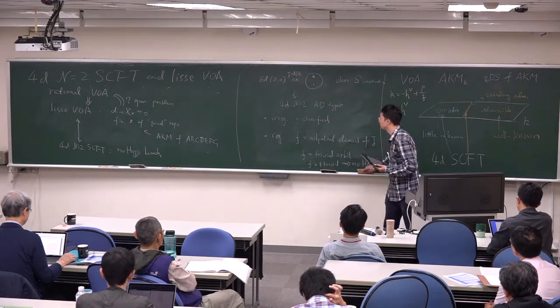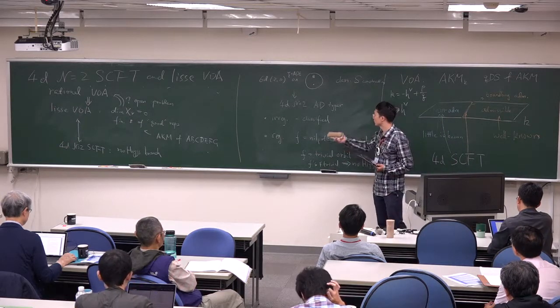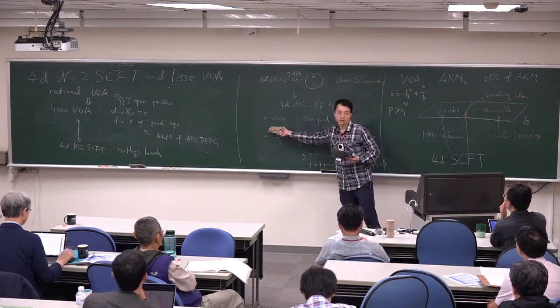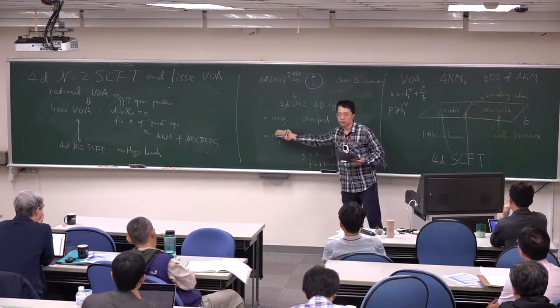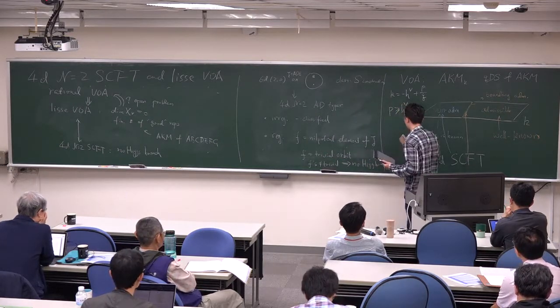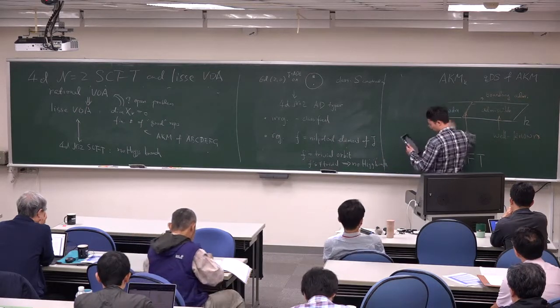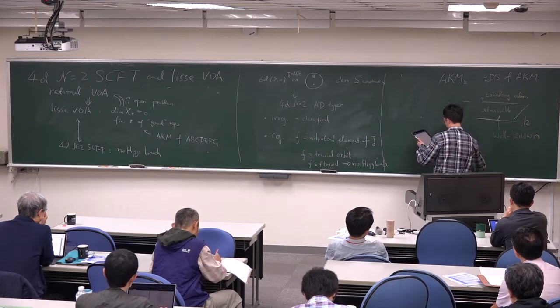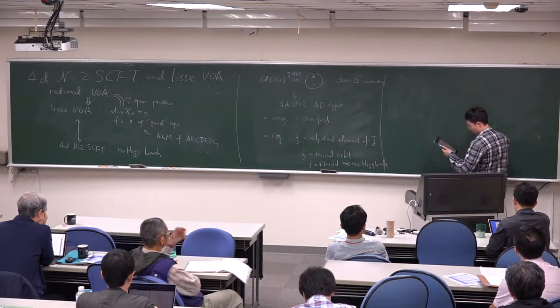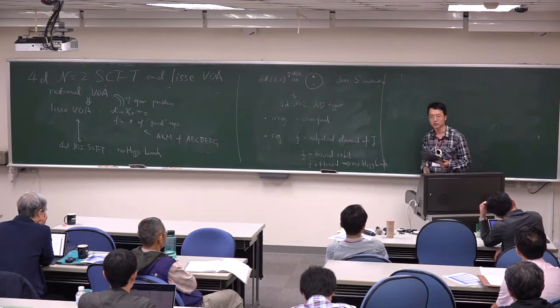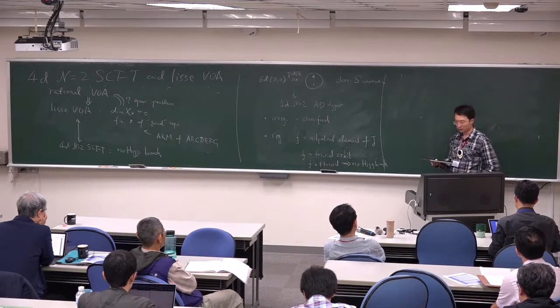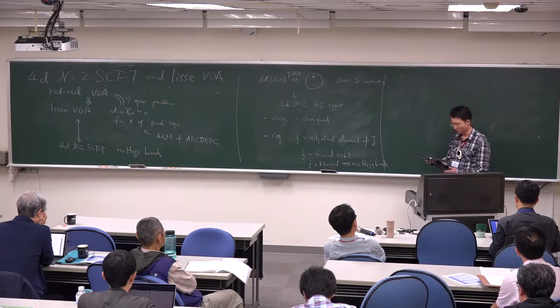So because of time, I just sketched the rough idea. So we first determine what should be the irregular puncture. And then, given irregular puncture, we determine the regular puncture. Of course, the simplest one is still the trivial orbit, but there are other orbits which suit our needs. So the consequences of our construction is, of course, we found a large table of new boundary-admissible or non-admissible lisse VOAs. And we also show it to our mathematician friends, see what they can do. And we also, because using physics, 4D physics computation, we can know a lot about the representation theory.